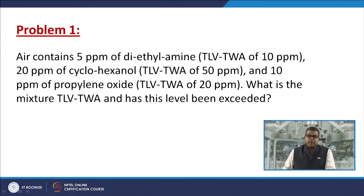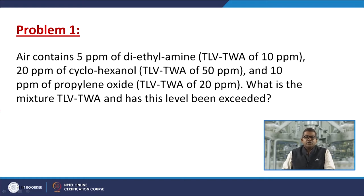Problem 1: Air contains 5 ppm of diethylamine with a TLV-TWA of 10 ppm, 20 ppm of cyclohexanol with a TLV-TWA of 50 ppm, and 10 ppm of polypropylene oxide with a TLV-TWA of 20 ppm. You need to calculate the mixture TLV-TWA and determine whether this level has been exceeded.